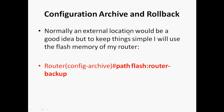Normally an external location would be a good idea, but to keep things simple I will use the router's flash memory. The syntax is: in archive config mode, give 'path flash: router-backup'. Here 'router-backup' is a user-defined name — you can use any name you prefer. I am using 'router-backup' in this example.